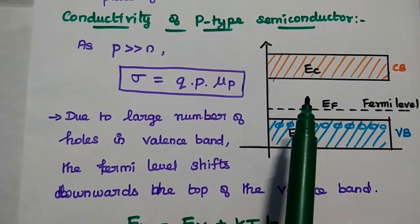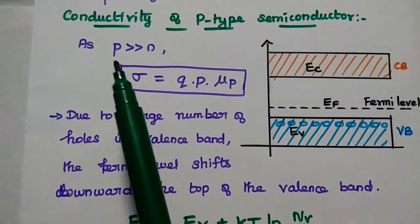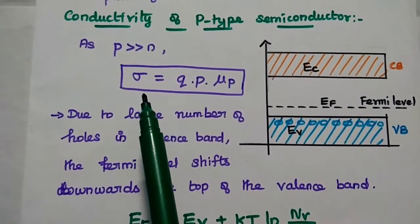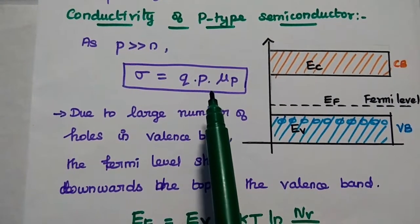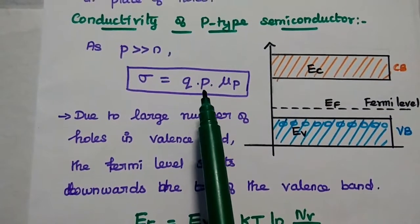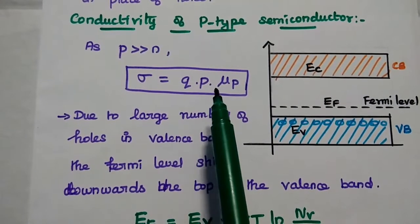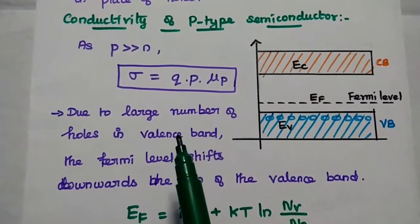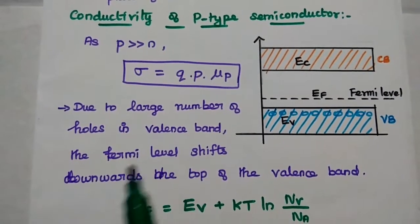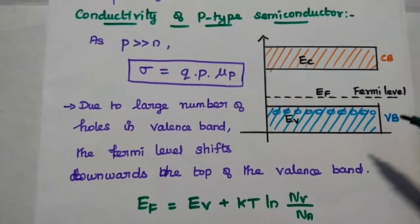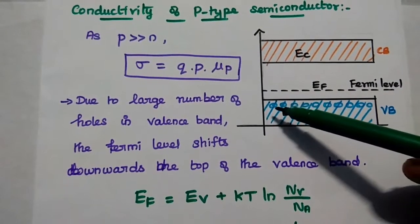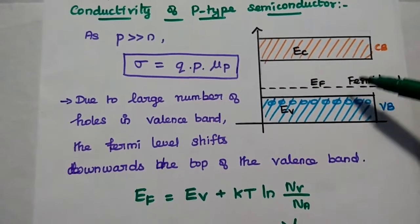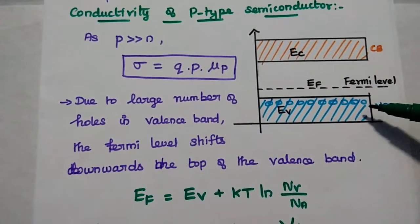The conductivity of P-type semiconductor is given by σ = q × p × μp, where p is the number of holes per unit volume, q is the charge, and μp is the mobility of holes. Due to the large number of holes in the valence band, the Fermi level shifts downwards towards the top of the valence band. The Fermi level — the highest energy level — moves towards the valence band in P-type material.